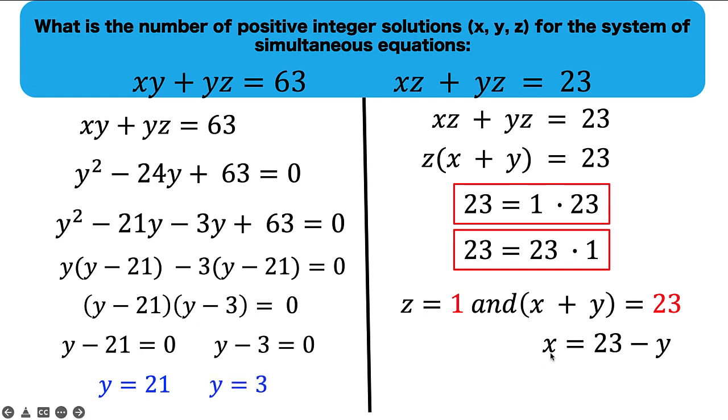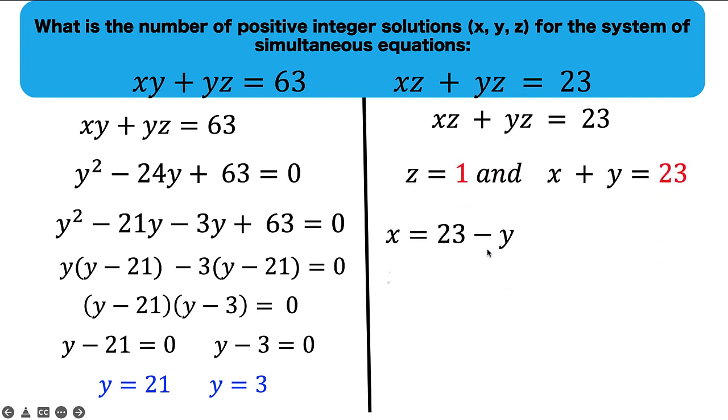And then let's go back to our equation for the value of x. x is equal to 23 minus y. And knowing that y is equal to 21, then x is 23 minus 21 or x equals 2. And knowing that y equals 3, then we have x equals 23 minus 3, which is this value of y. So x is equal to 20.